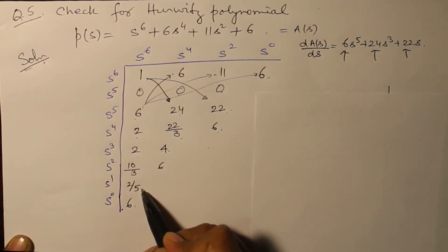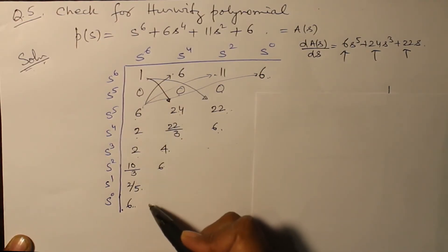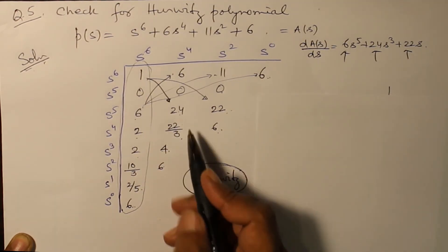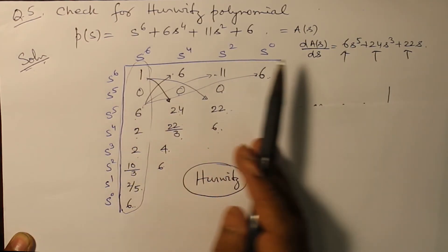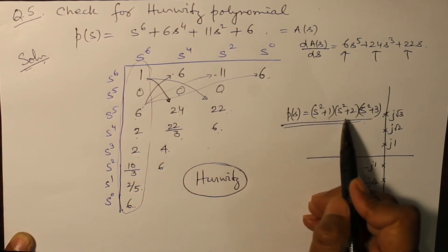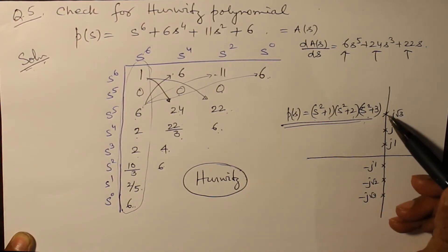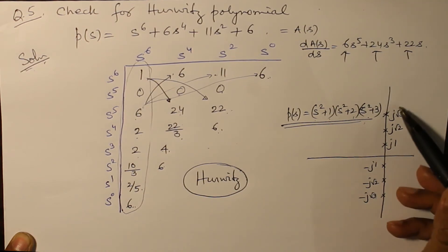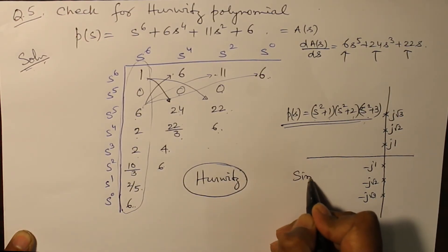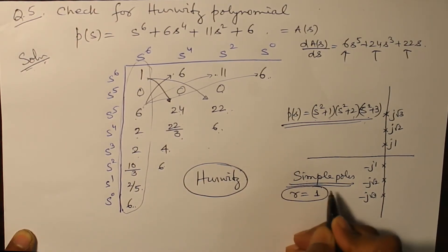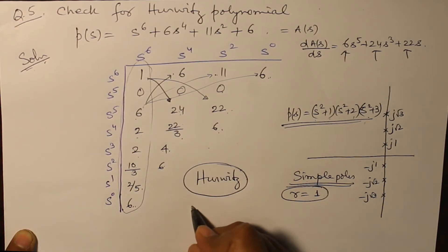Then 10 by 3 into 4 minus 2 into 6 divided by 10 by 3 gives you 2 by 5, and here 6. This is a Hurwitz - all the elements are positive. If you have time, if you want to factorize it, you'll get the result (s^2 + 1)(s^2 + 2)(s^2 + 3) equals 0. So all the roots are lying on the j omega axis. So even if there are simple roots, simple poles - what are simple poles? With multiplicity 1, it is not being repeated - then in that case the polynomial is a Hurwitz one.